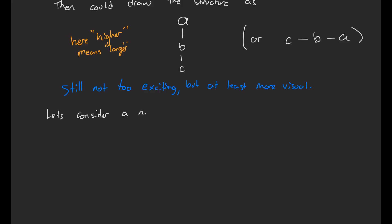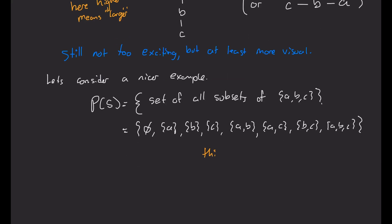I want to consider a nicer example. I'm going to take our set of S, and that's going to be the set of all subsets of S. We can list all the subsets out, so that's going to be the empty set, all the singletons, A, B, C, all the pairs, A, B, A, C, B, C, and of course, the whole set itself is a subset. This is awful to look at. This is a big mess.